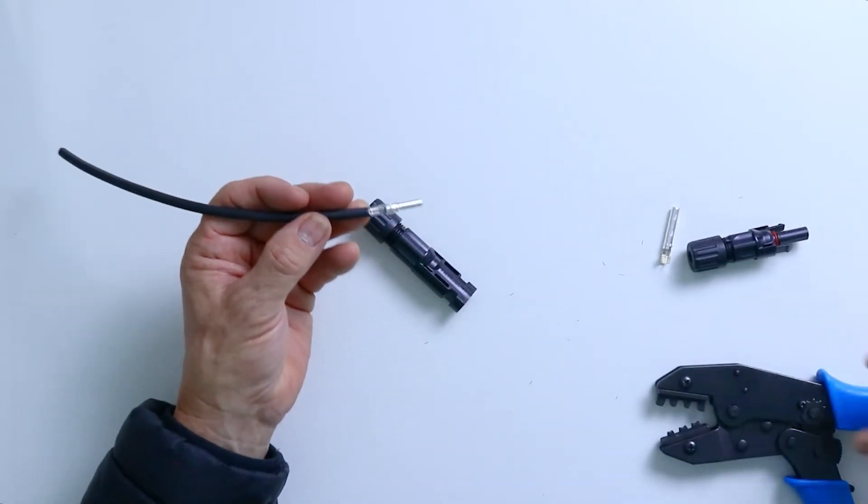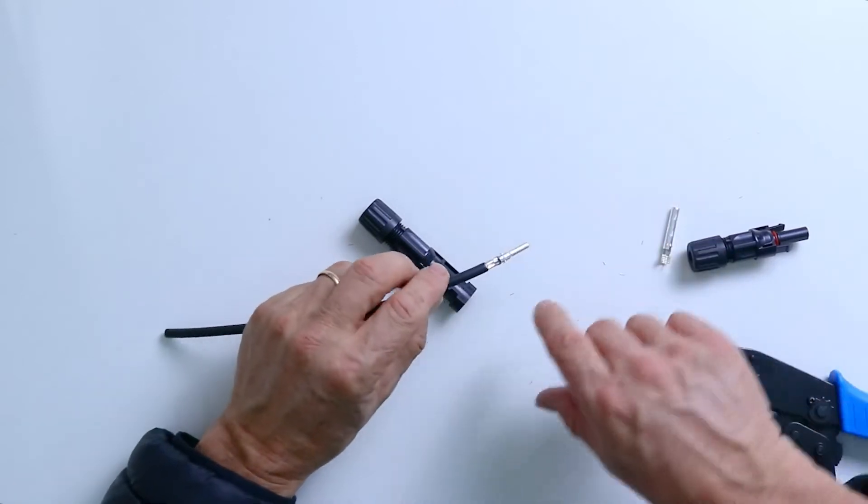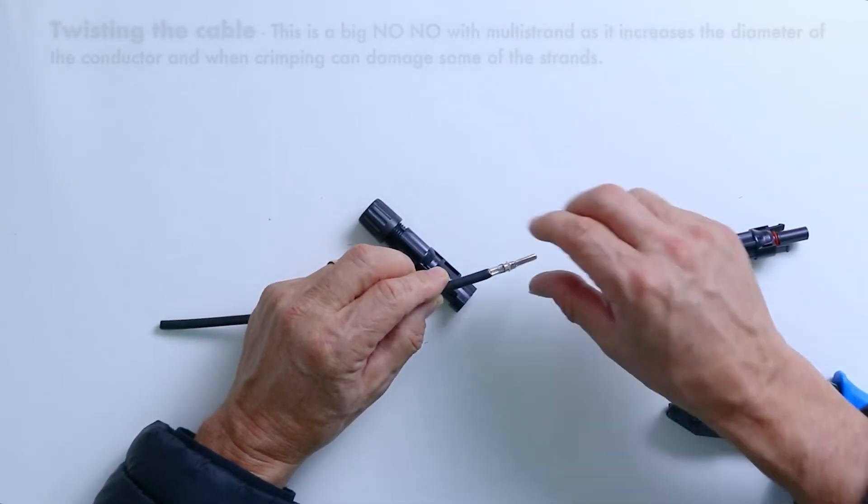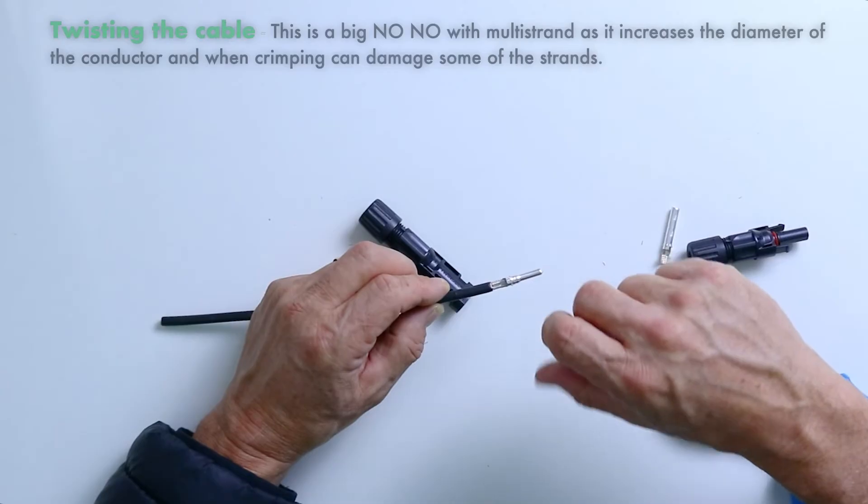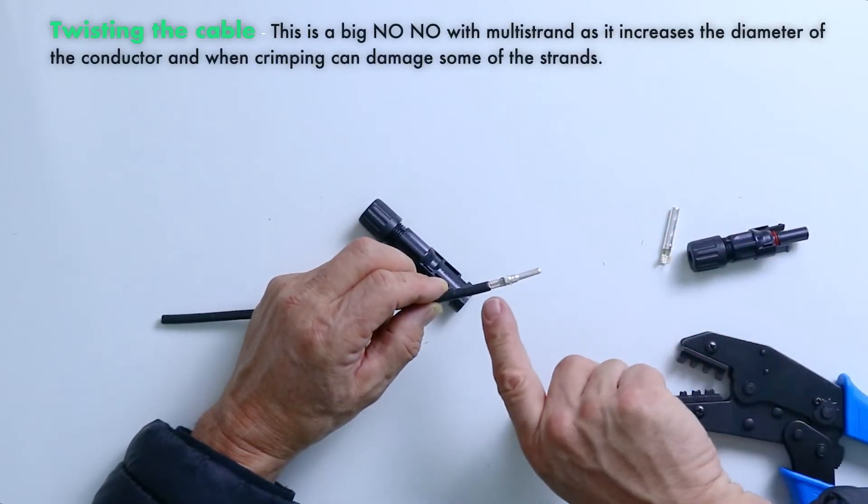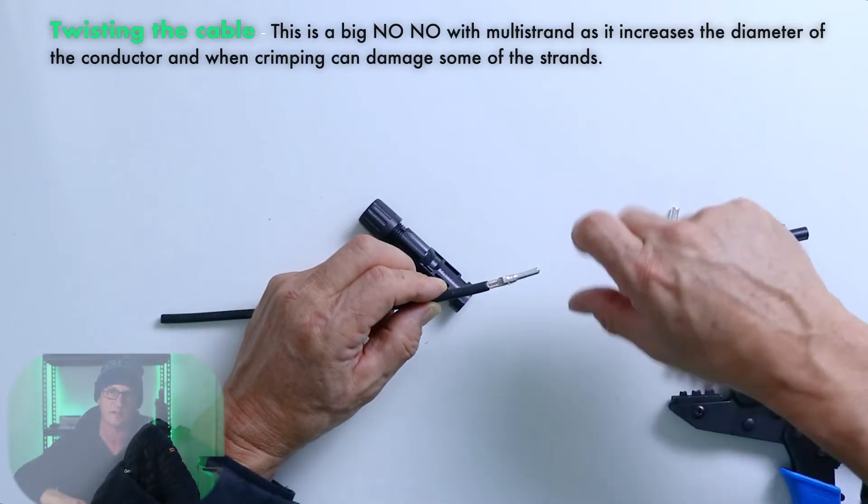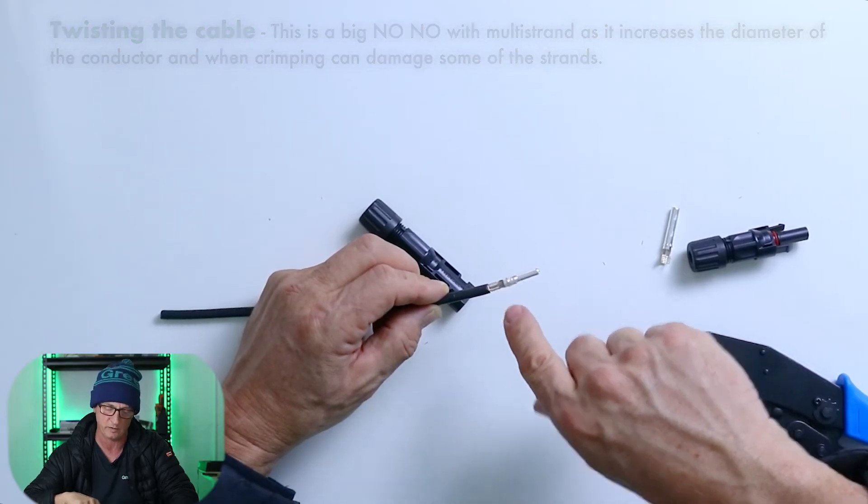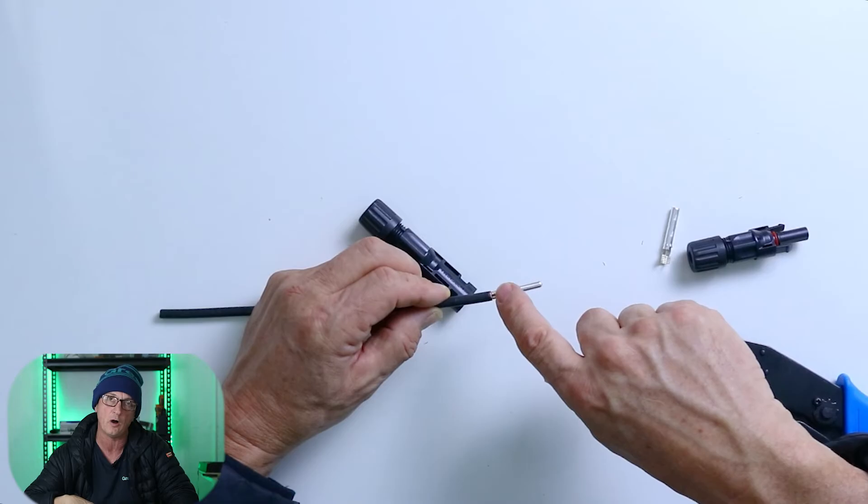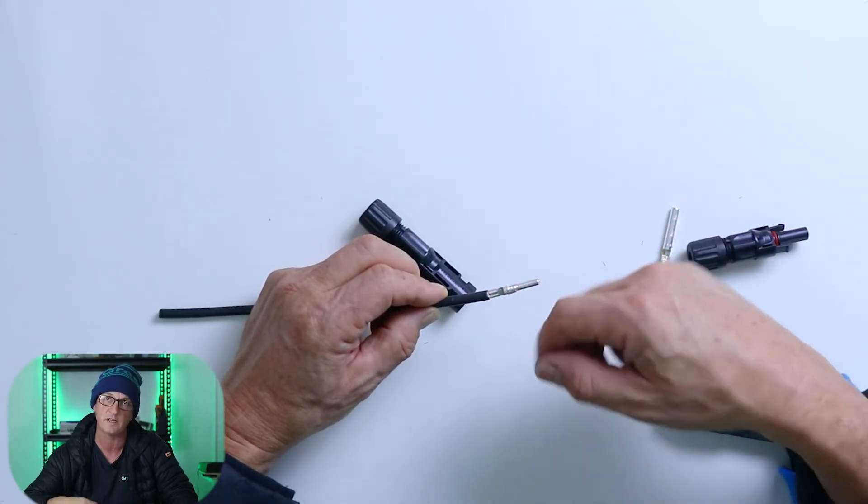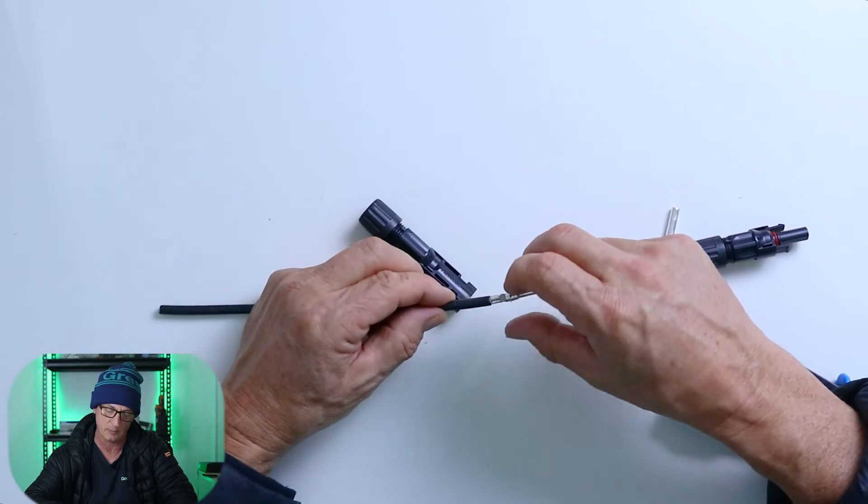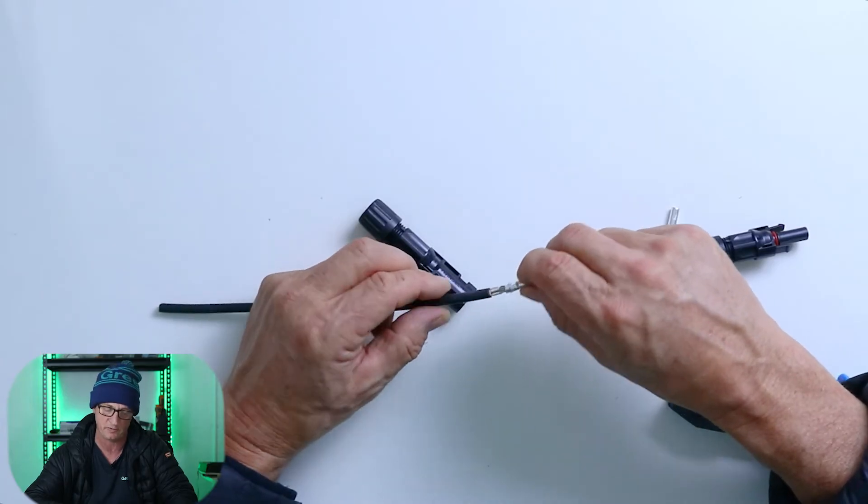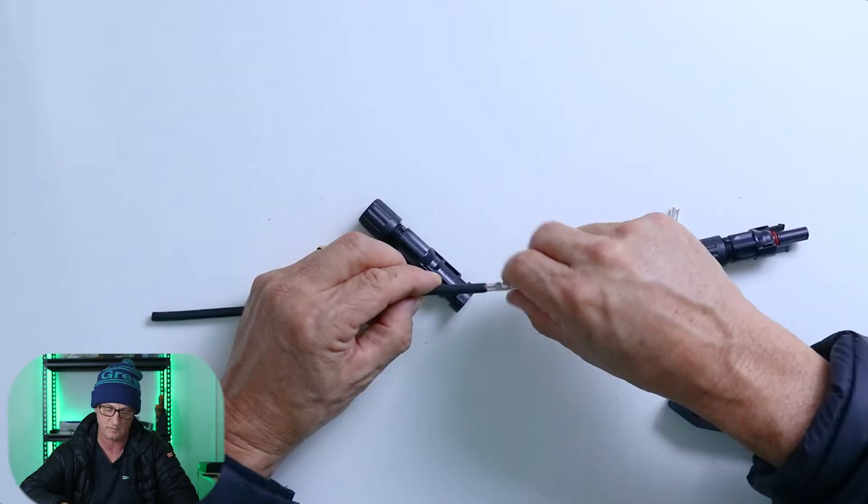So what happens here is that it crimps down onto the actual strand, this multi-strand solid DC cable that's tinned. With this cable, what you don't do is twist it. Now some people, when they actually take the insulation off and they use a pair of pliers, they twist the insulation. And this actually twists the strands. Now the rule of thumb is, if this is not twisted in the first place, don't twist it. When you start twisting the strands within the cable, it actually increases in diameter. And when you come down on the crimp, you can break some individual strands. So it's very important not to twist this cable.